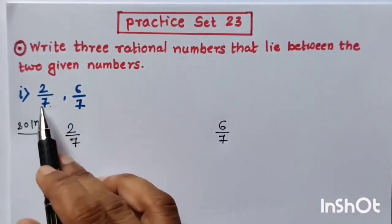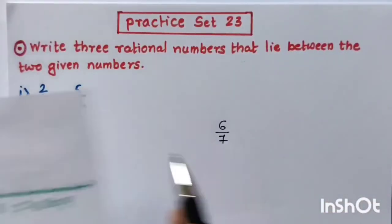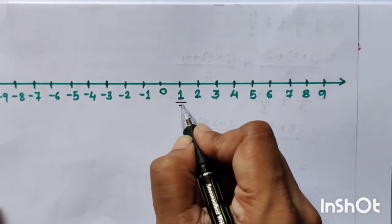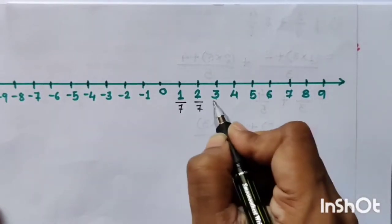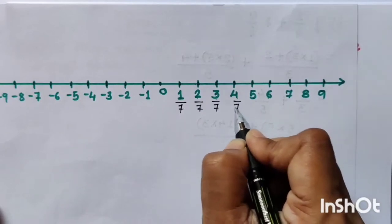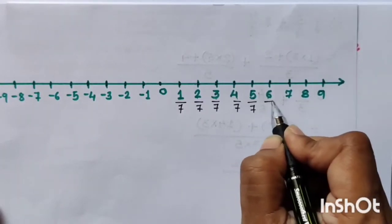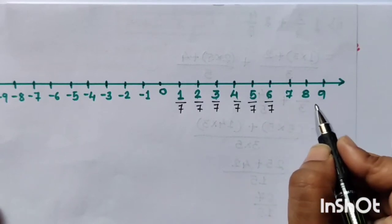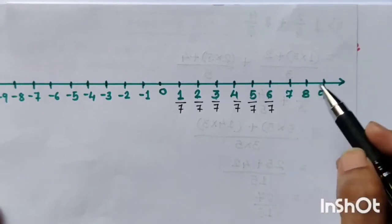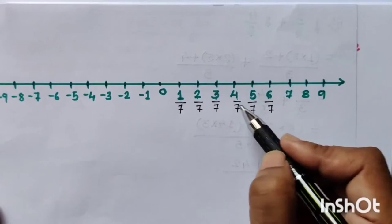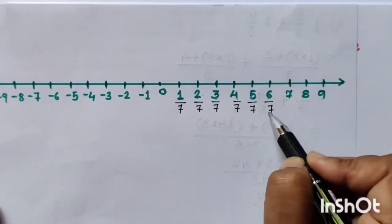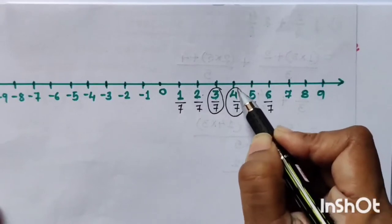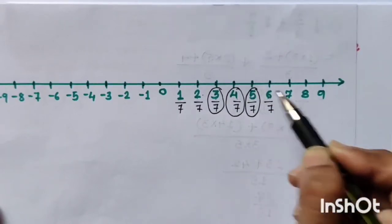As there is 7 in the denominator, if we put 7 in the denominator of all the numbers — 1/7, 2/7, 3/7, 4/7, 5/7, 6/7 — the three numbers we get between 2 upon 7 and 6 upon 7 are 3 upon 7, 4 upon 7, and 5 upon 7.